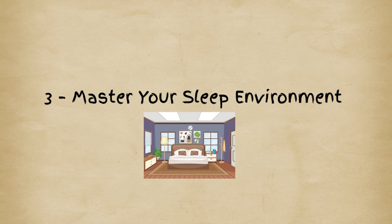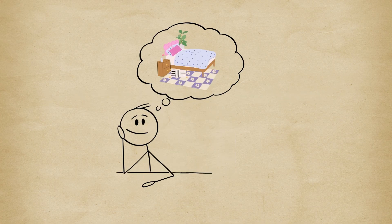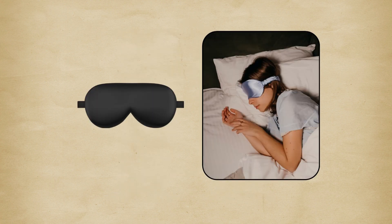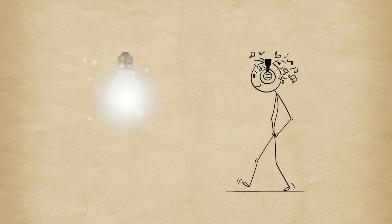3. Master your sleep environment. Think of your bedroom as a sleep sanctuary. It should be cool, quiet, and dark. Use blackout curtains or an eye mask to block out light. White noise or earplugs can drown out distractions.